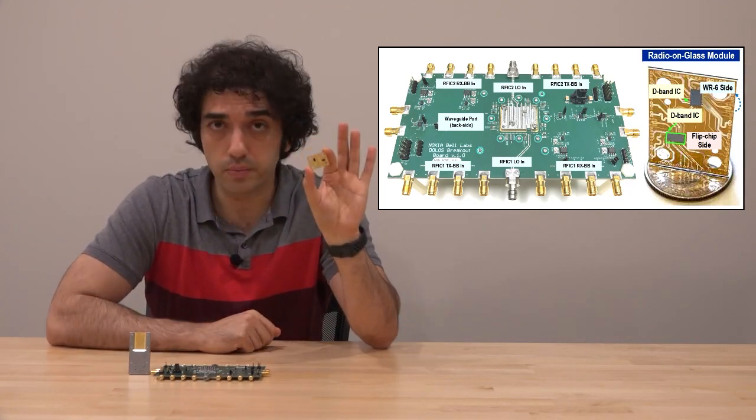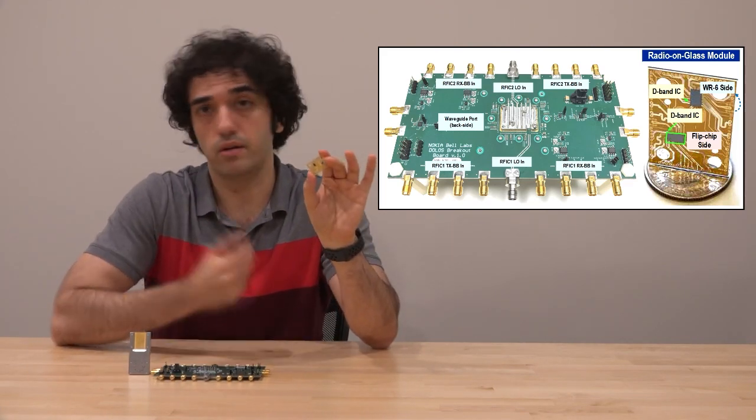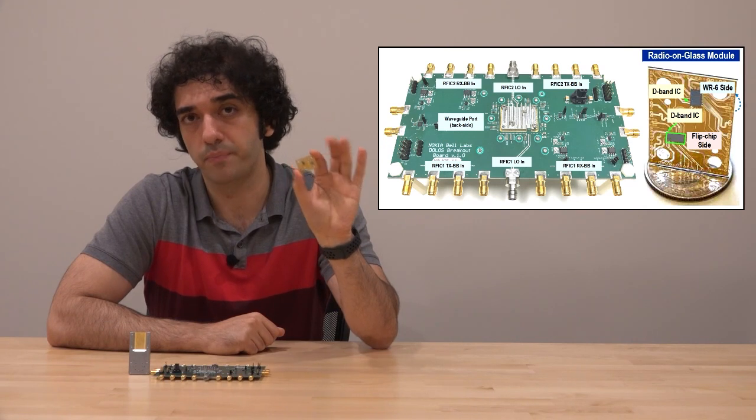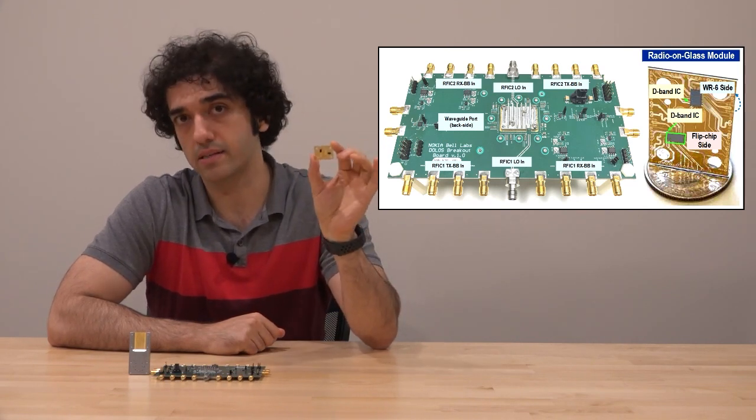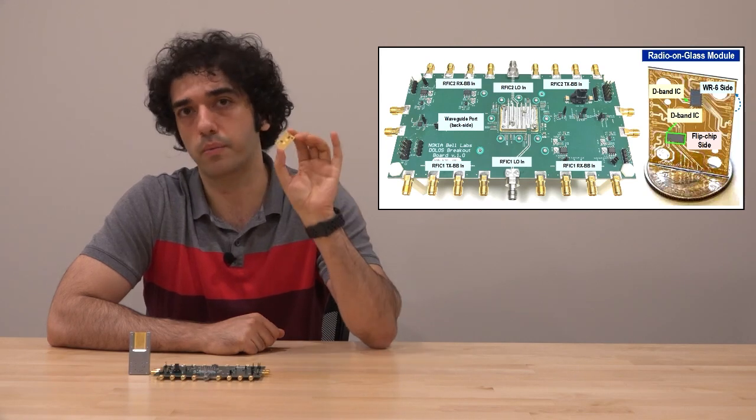This is, at the same time, an interposer, an interface to the antenna, a BGA package, and of course, connects all the signals to the chips. We call this radio on glass, and we believe that this is the next generation of ultra-high performance devices operating at these frequencies.